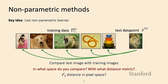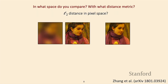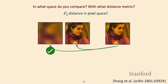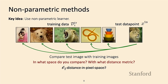One option is L2 distance in pixel space — Euclidean distance in the original image space. However, L2 distance in pixel space is actually terrible for comparing images. For example, two images that look perceptually similar may be far apart in L2 distance, while perceptually dissimilar images may appear close. So we don't want to use L2 distance.